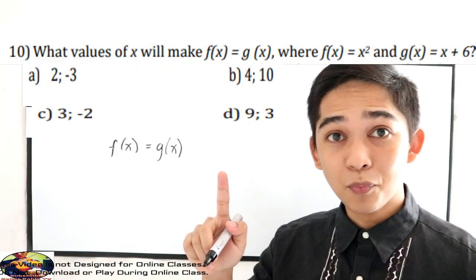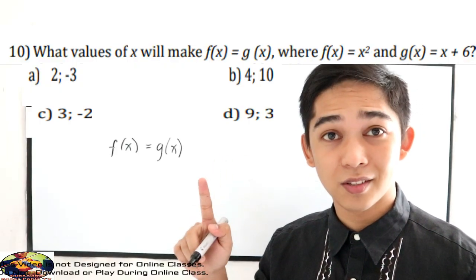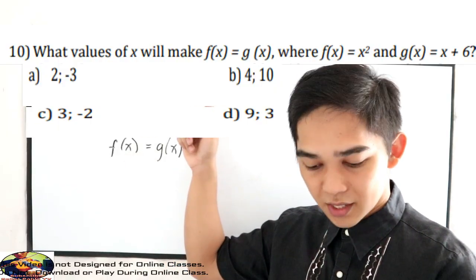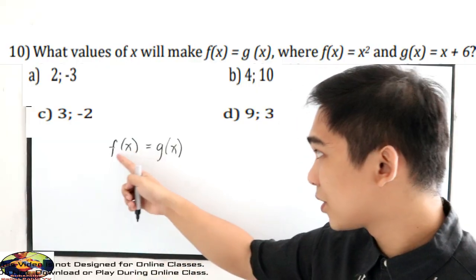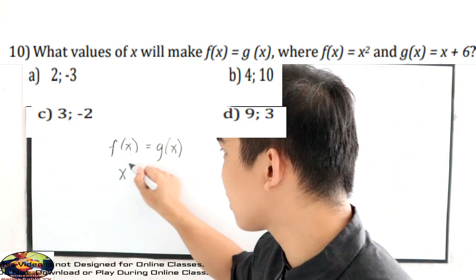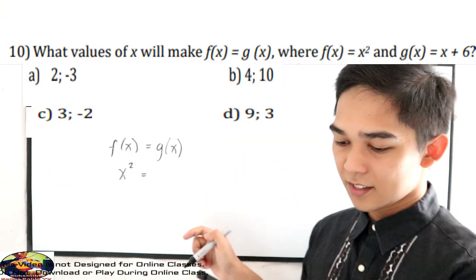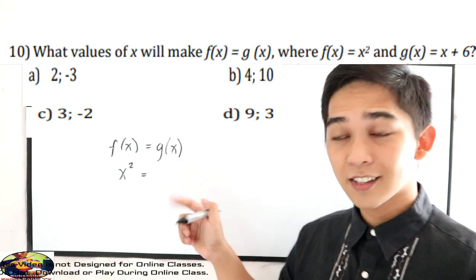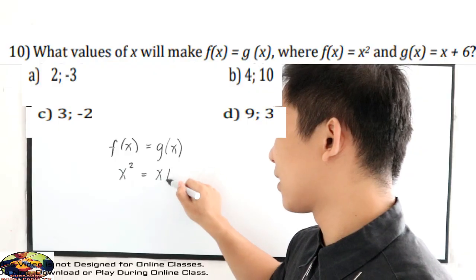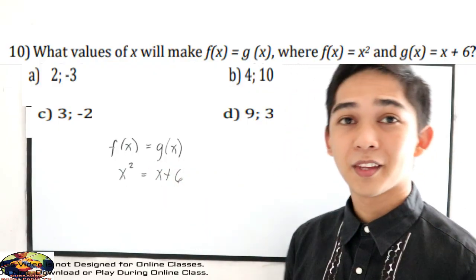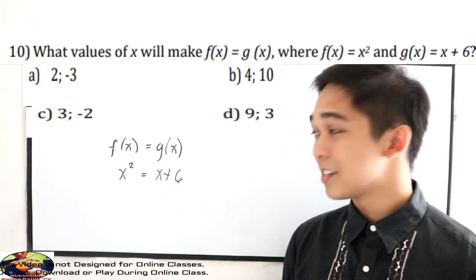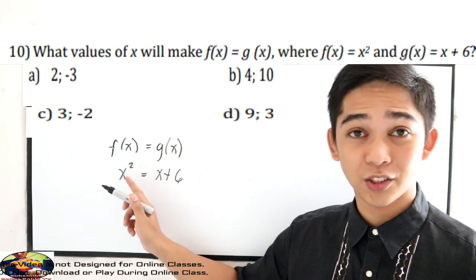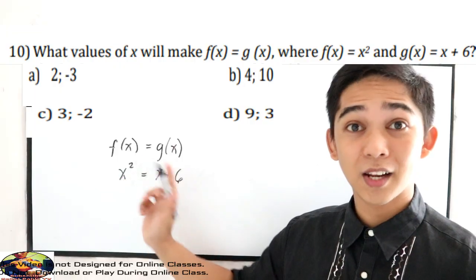Our first step: we need to substitute the given functions. For f of x, our value is x squared, so change f of x to x squared. And our g of x is x plus 6 — just substitute. Since this is raised to 2, we know that this is a quadratic function, so let us equate to 0.